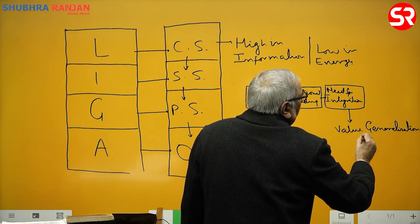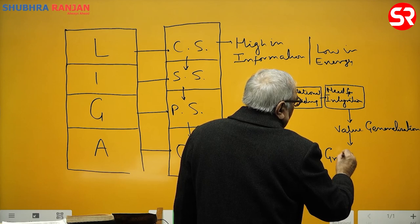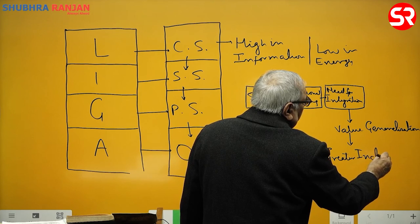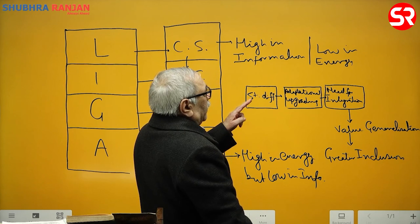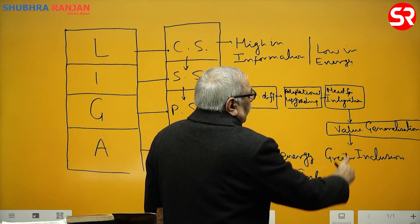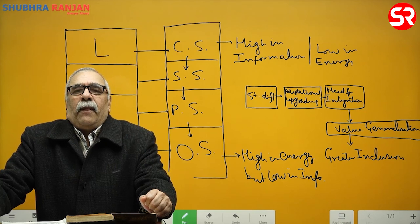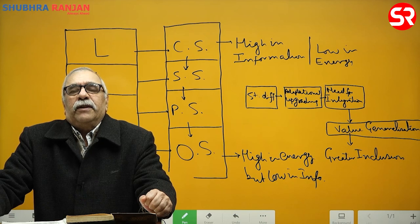Value generalization leads to greater inclusion. So if there is more differentiation, this will exert pressure for value generalization, because value generalization leads to greater inclusion. Value generalization means, if we go back to Parsons' pattern variables, he is talking about shift from particularism to universalism.